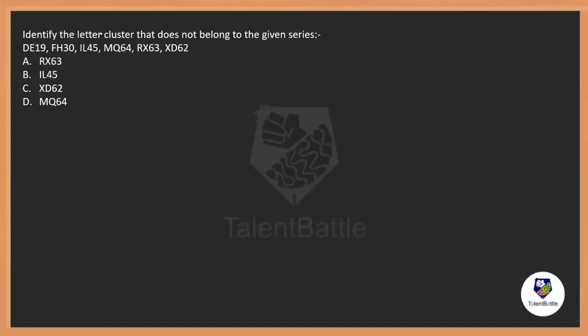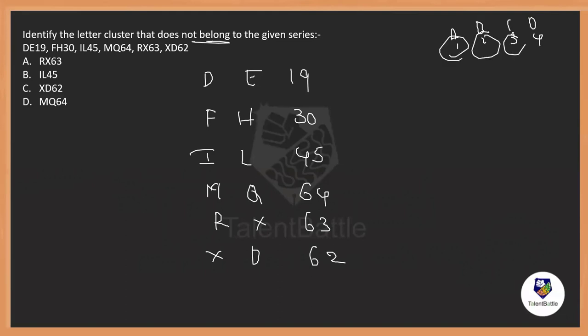Identifying the letter cluster that does not belong to the group. So, let's take D, E, 19, F, H, 30, I, L, 45, M, Q, 64, R, X, 63, and X, D, 62. So, first what we will do, we will view the alphabets and the numbering. That means A is 1, B is 2, C is 3, D is 4. As per this, we will view the alphabets and the numbers. Always remember this to solve any kind of questions that belongs to letter series.